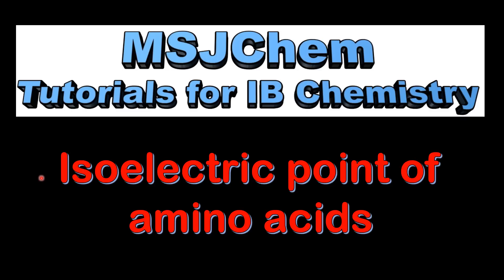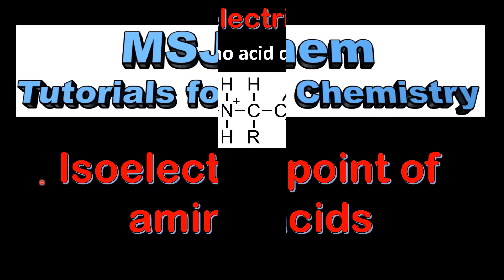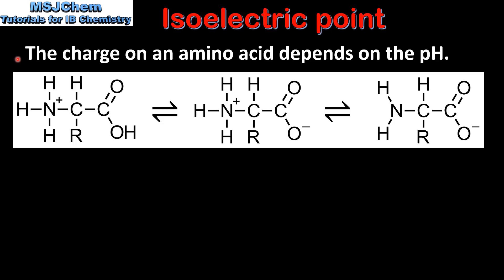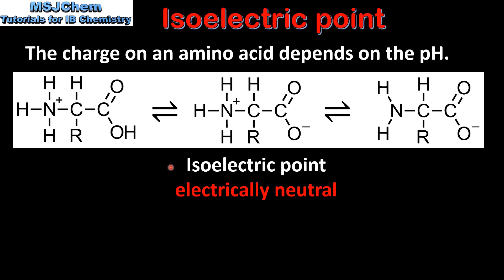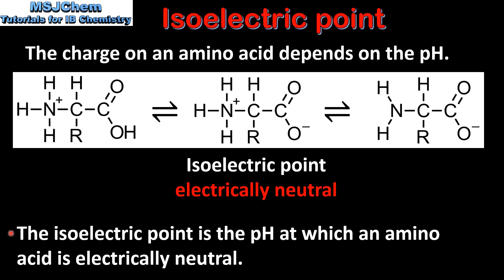This is MSJChem. In this video I'll be looking at the isoelectric point of amino acids. As we saw from the previous video, the charge on an amino acid depends on the pH. The pH at which an amino acid is electrically neutral is the isoelectric point. At its isoelectric point an amino acid has both a positive and a negative charge and it's known as a zwitterion.